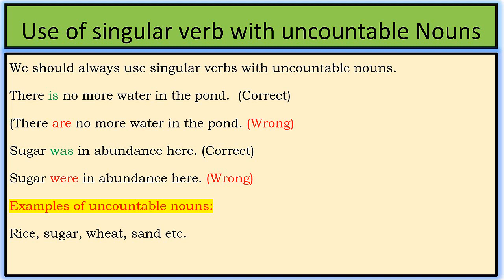Second example: "Sugar was in abundance here" is a correct sentence. "Sugar were in abundance here" is a wrong sentence because the use of a plural verb with an uncountable noun is incorrect.